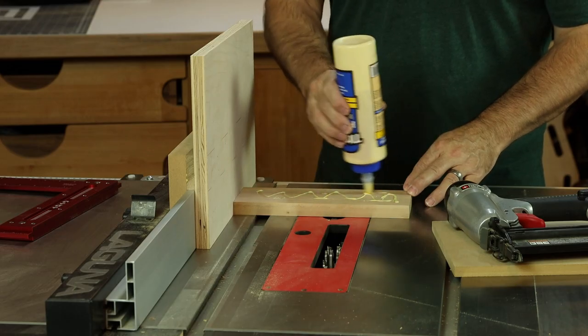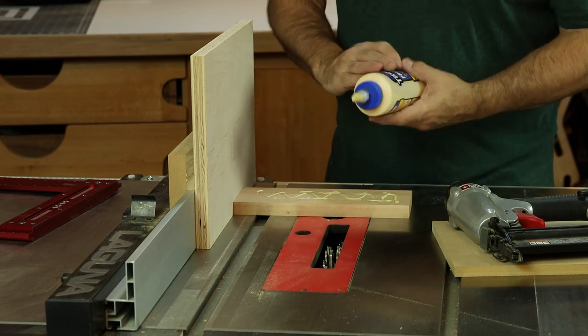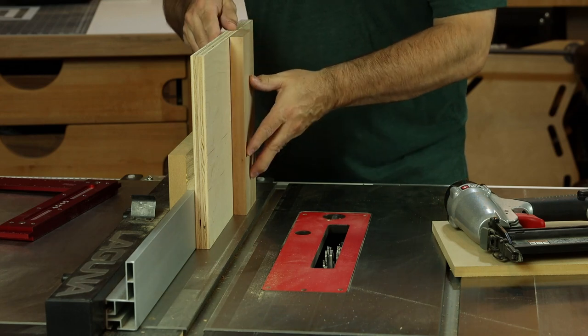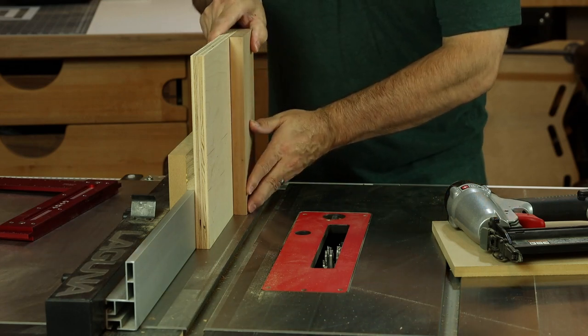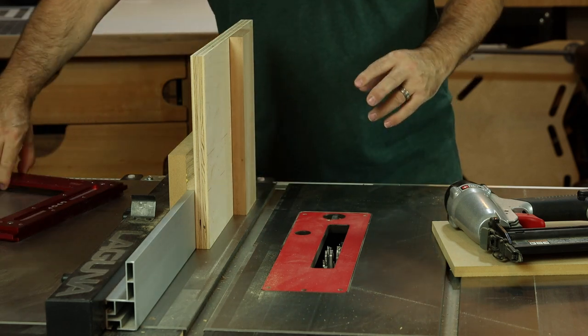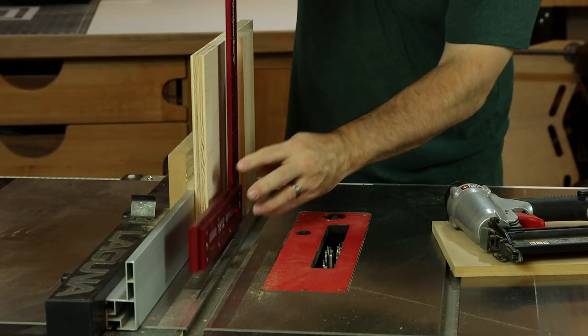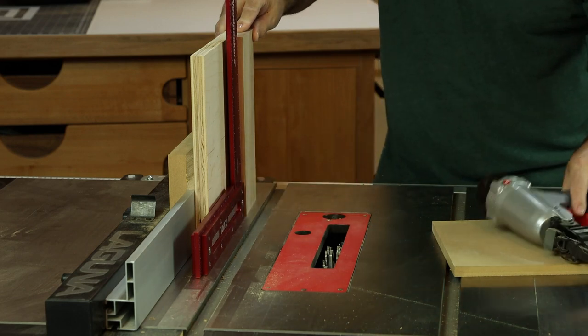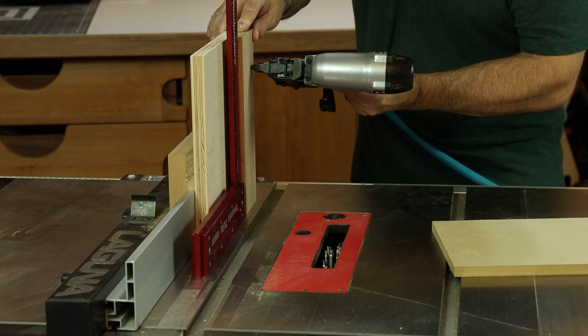Looks good. Now we've made up the backer block for the vertical fence and this is a critical part. We're going to attach this with some glue and some Brad nails for the permanent attachment. What you want to do though is make sure that it sits perfectly square this way. Once you've double-checked that you're perfectly square to the table go ahead and set that position with Brad's.